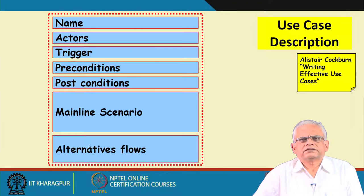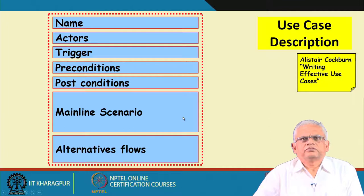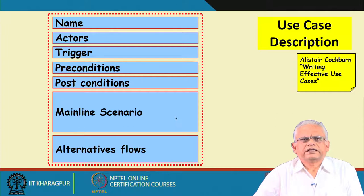The use case diagram gives only a limited amount of information. More specific information needs to be accompanied in the form of a text description. The UML standard by itself does not recommend any specific style for recording the information to accompany the use case diagram.